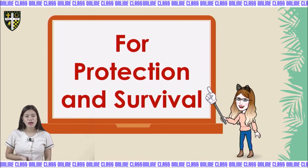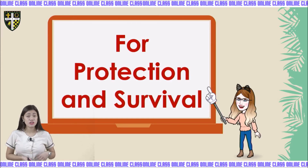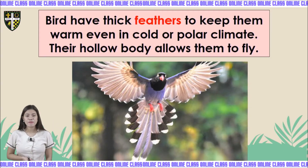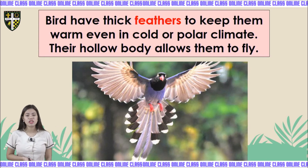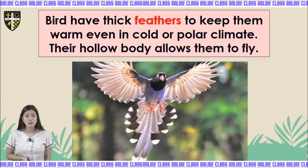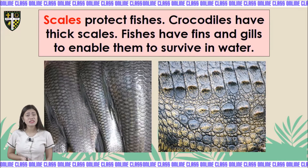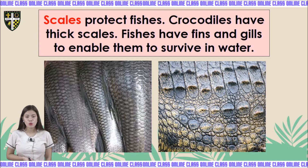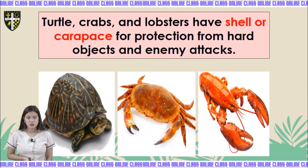Now let's talk about protection and survival — how animals protect themselves and survive. Birds have thick feathers to keep them warm even in cold or polar climates. Their hollow body allows them to fly. Scales protect fishes. Crocodiles have thick scales. Fishes have fins and gills to enable them to survive in water.